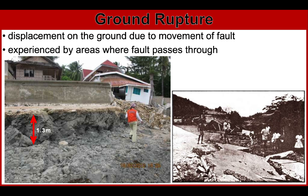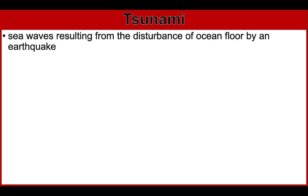The next hazard is tsunami. A tsunami is a series of sea waves resulting from the disturbance of the ocean floor by an earthquake. Tsunamis are commonly generated by undersea earthquakes and their wave height could be greater than 5 meters.